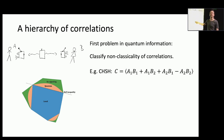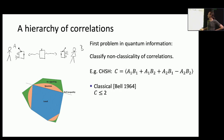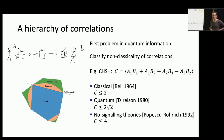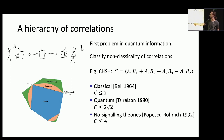In the easiest case we can look at the CHSH correlator, which many of you have seen. There's a hierarchy of values this correlator can take — it measures the strength of correlations. The data is compatible with some classical process if this correlation function takes a value of at most two, known since the 1960s. Between two and two-root-two it's compatible with some quantum process, known since the 1980s. More generally, any value up to four is still compatible with the laws of special relativity. So in the space of correlations we have these nested sets: classical, quantum, and no-signaling.